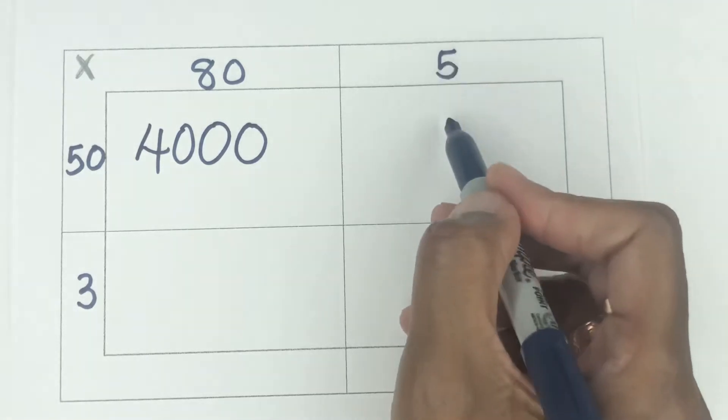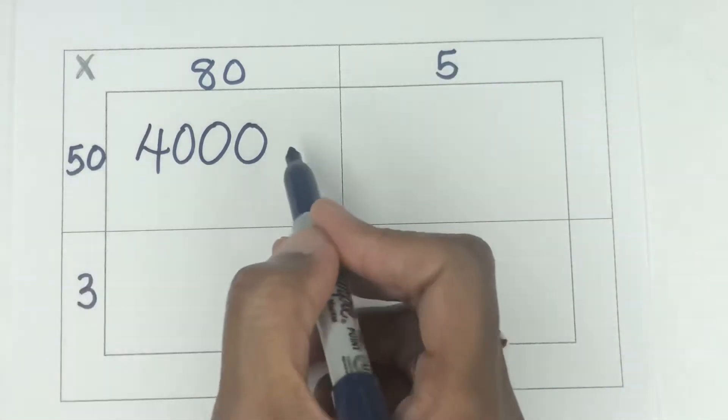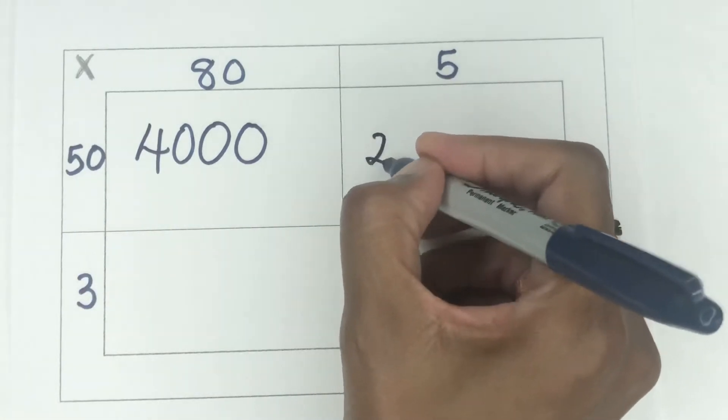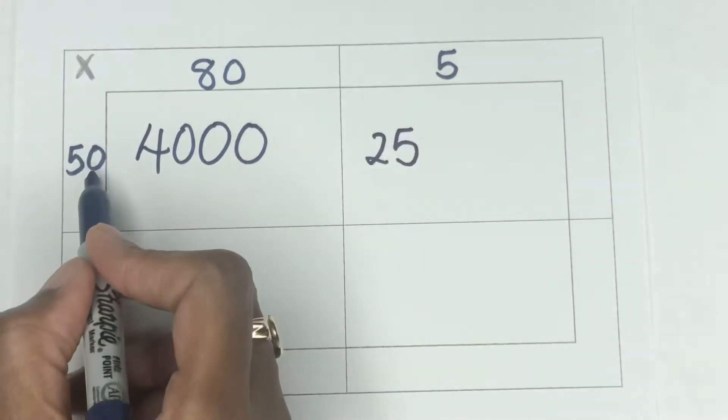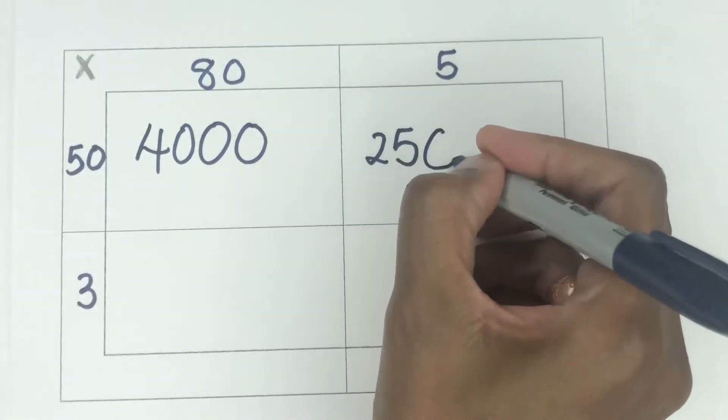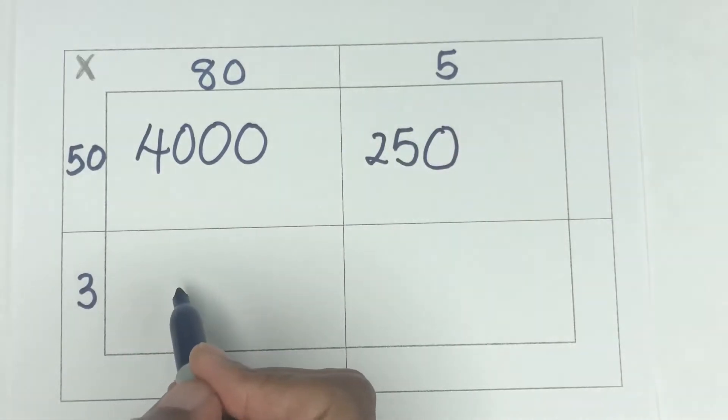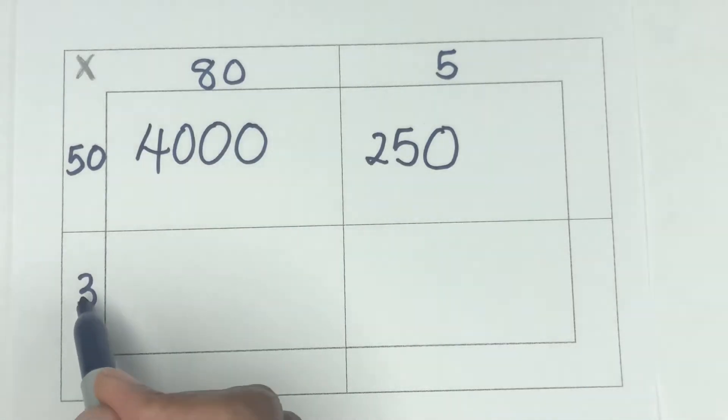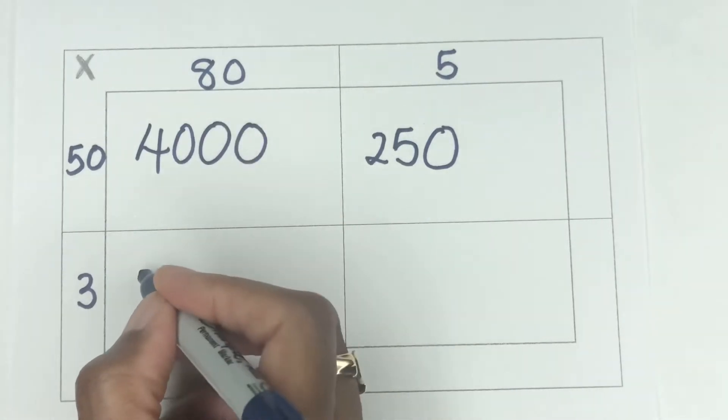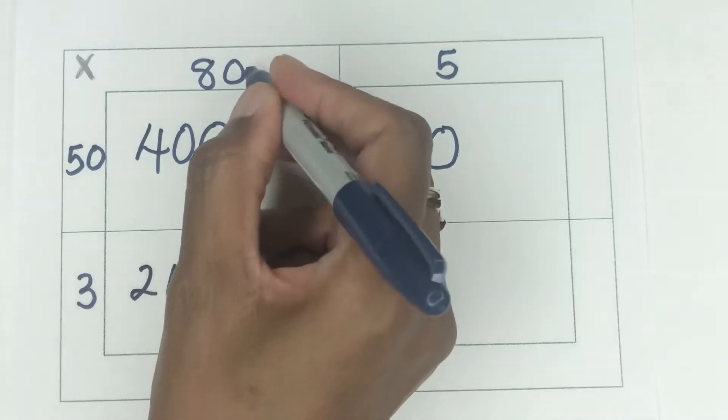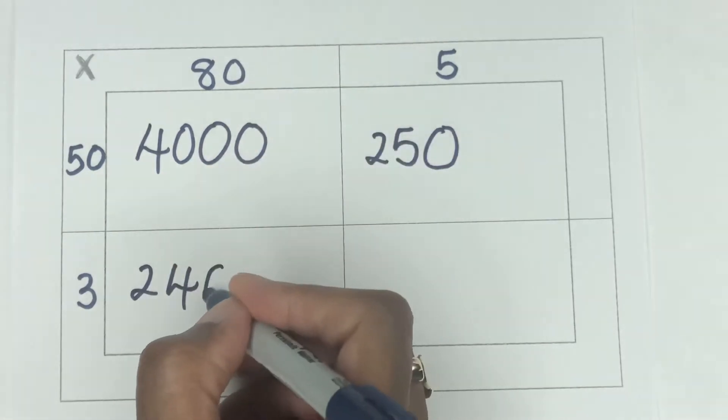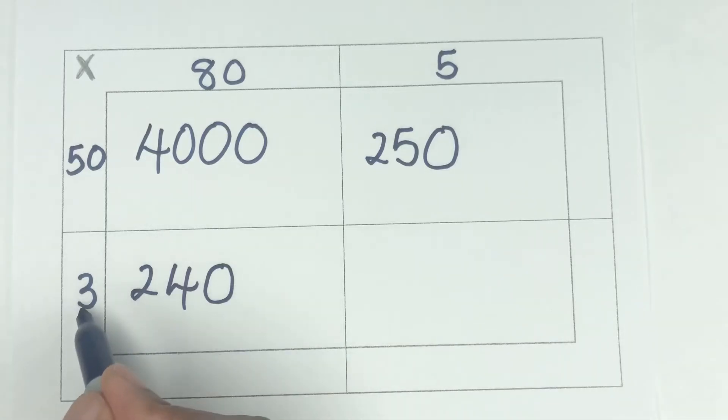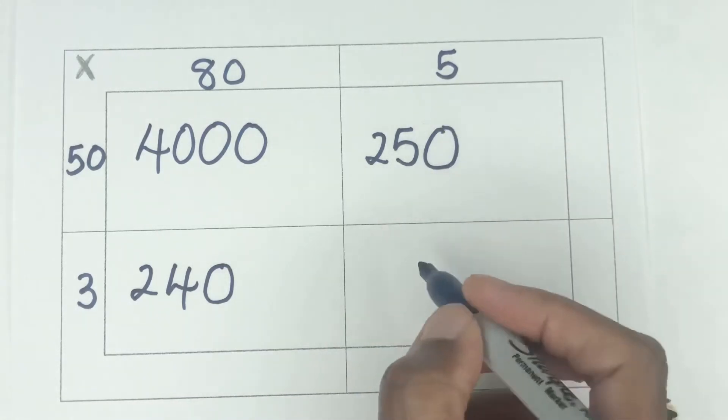When you go across here, it's going to be five times the 50, right? So the five times the five is 25. And then you tag on that zero there. That's the beauty of the zeros. Down here in this third box, we're going to do 80 times three. So three times eight is going to give you 24 plus that zero. We're going to tag that zero on to make it 240. And then the last box you have three times five, which is 15.